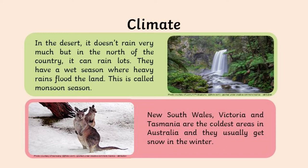They have deserts where it doesn't rain very much. But in the north of Australia, it can rain a lot. They also have a wet season where they tend to have flooding, which is often called the monsoon season. Then in territories such as New South Wales, Victoria, and Tasmania, those are their coldest areas and they can and usually do get snow in their winters.